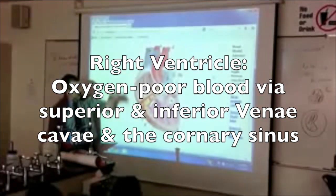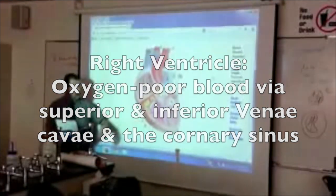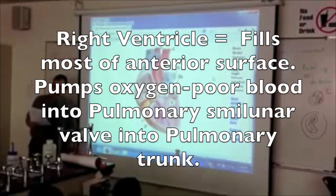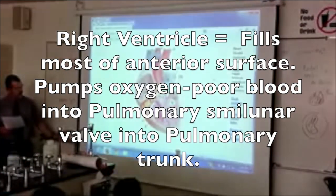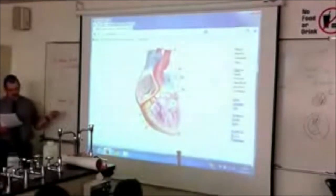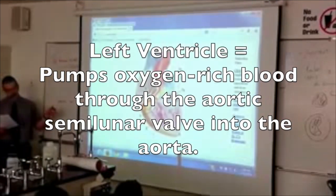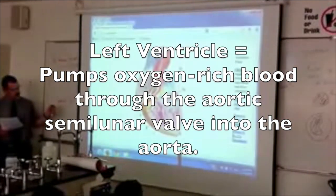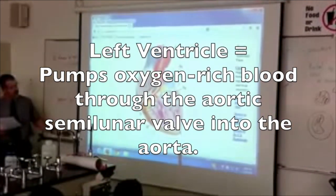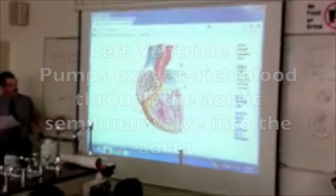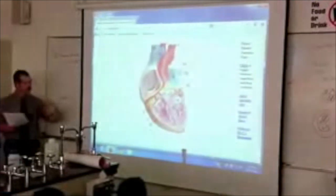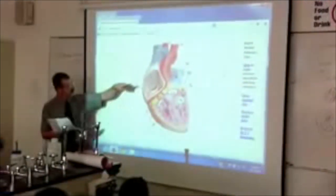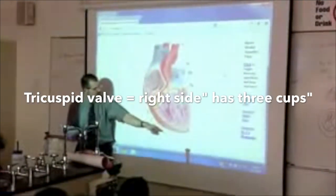Roman numeral three — what is it? Right ventricle. Roman numeral four — a ventricle. You can't see the other one, it's back in there. But again, get your right and left straight. If this is the right atrium, that's the right ventricle.